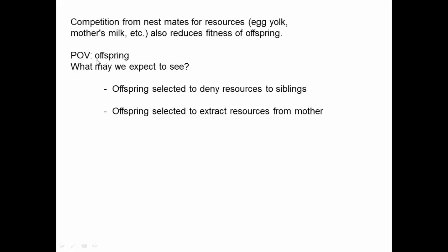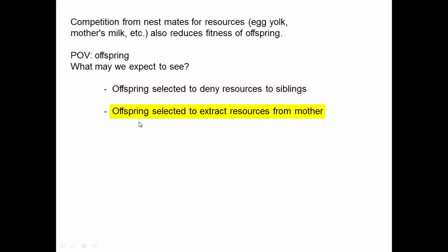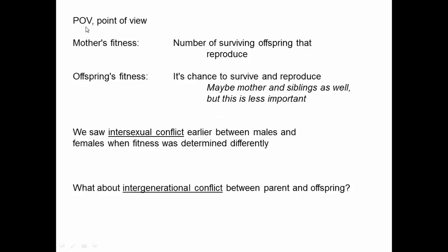Let's shift our point of view to that of the offspring. If we're thinking about behaviors that would optimize the fitness of each of those offspring, what might we expect to see? First, we might expect to see offspring selected to deny resources to siblings, by competing with one another. We may also expect to see offspring selected to extract the maximum amount of resources from the mother, because by getting more resources they're increasing their own fitness, perhaps at the cost of the mother, but for any particular organism, its own fitness is the primary factor that determines natural selection.